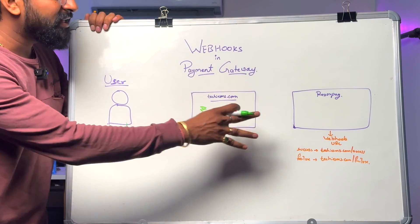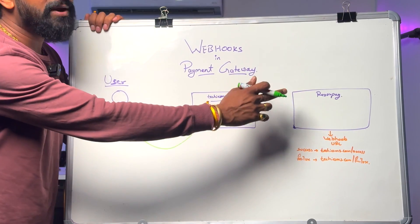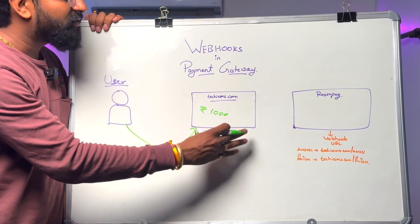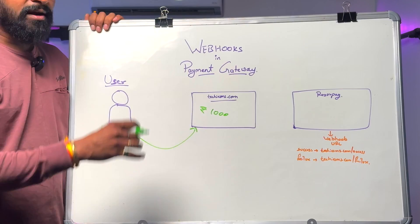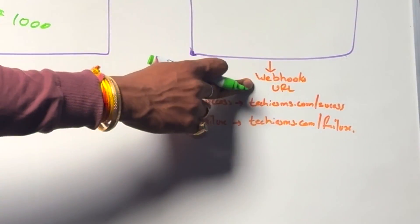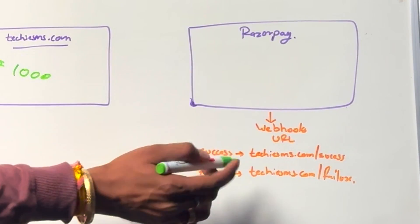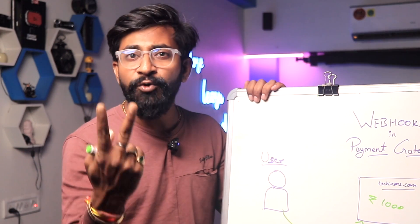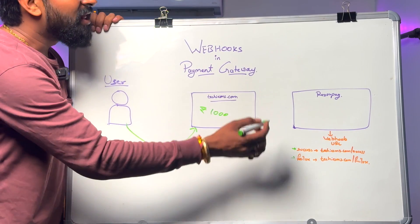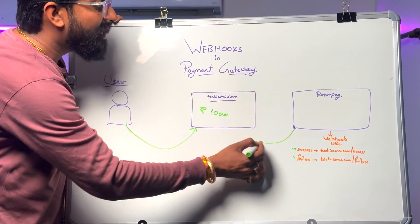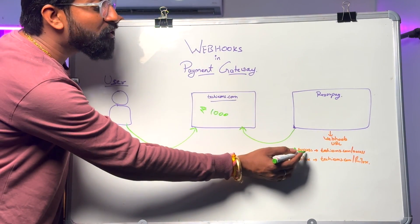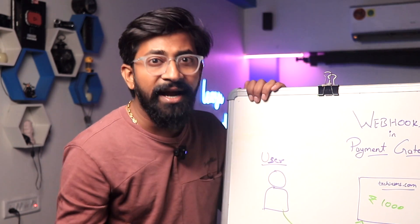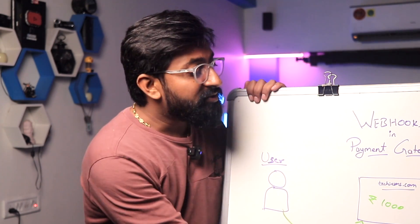During checkout, you select Razorpay as the payment gateway, and techiesms.com redirects you to the Razorpay website where you get a QR code to scan and pay. After checkout, the task of techiesms is complete — now it's Razorpay's job to collect the payment. I've already provided webhook URLs to Razorpay: if payment is successful, call this URL; if failed, call this other URL. Once payment is made, Razorpay calls the webhook URL, letting techiesms know the payment was received with all data — amount, time, order ID, payment ID — stored in the payload.